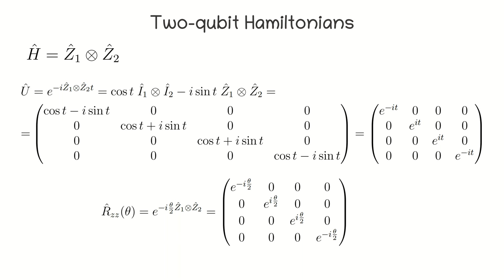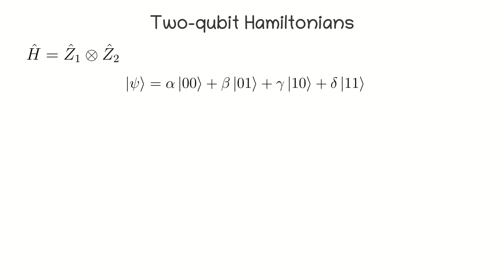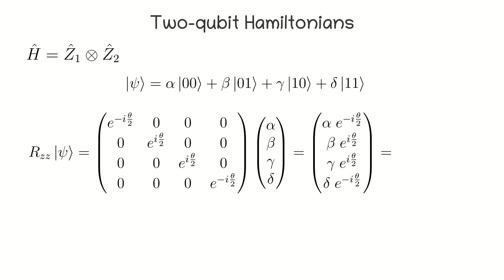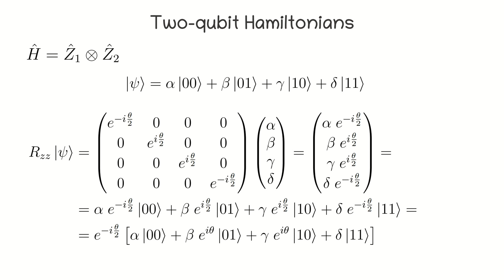Our goal is to construct a quantum circuit that implements this operator. To do this, we first look at how the Rzz operator acts on some state vector with normalized coefficients. Therefore, after some matrix vector multiplication, we get the following line. Here, we can take the global phase factor out of the bracket. So, basically, the evolution under that Z Hamiltonian is a simultaneous rotation of two qubits around the z-axis.